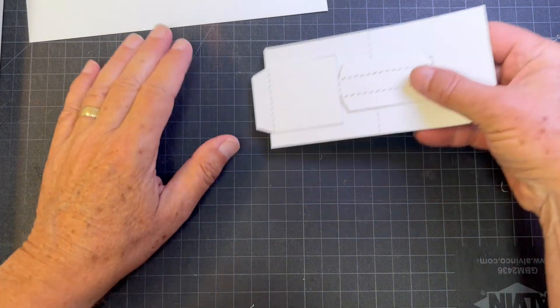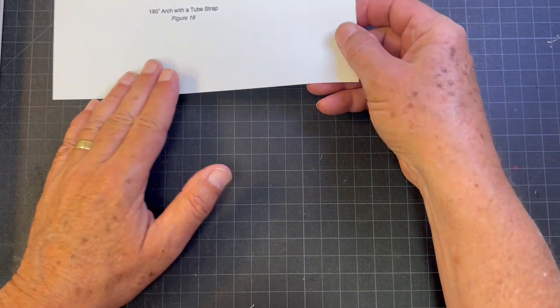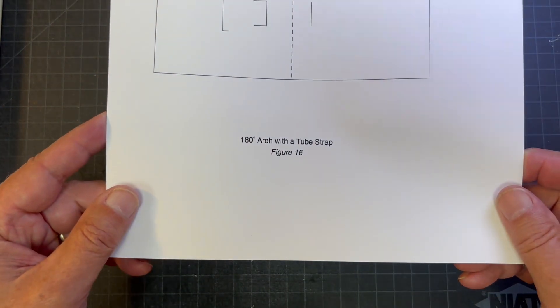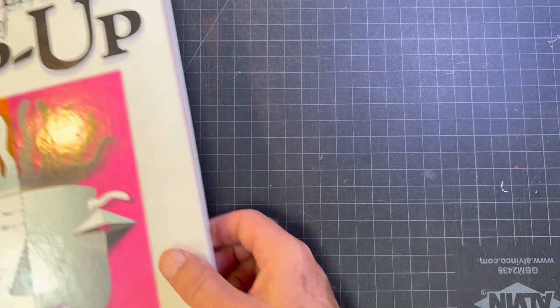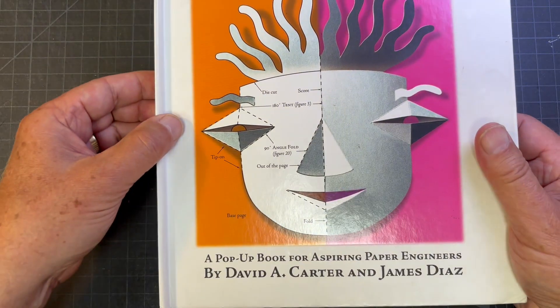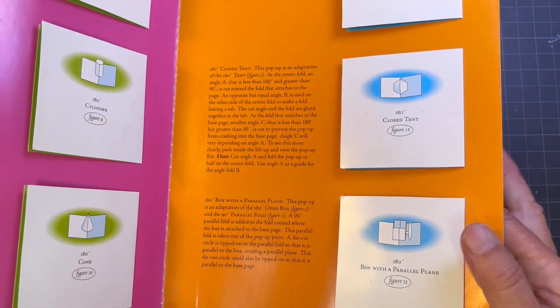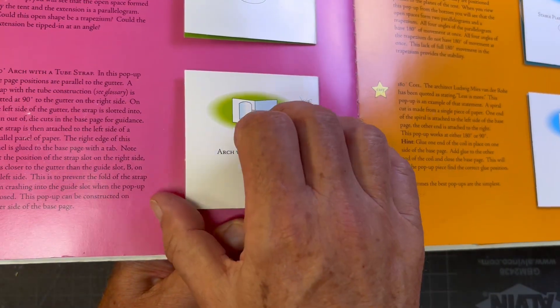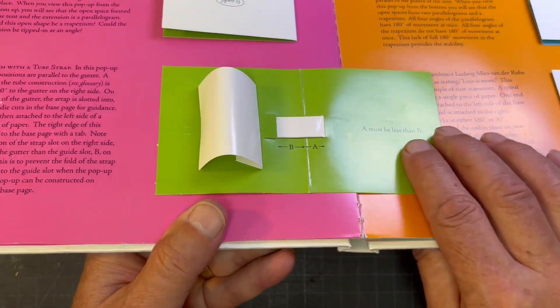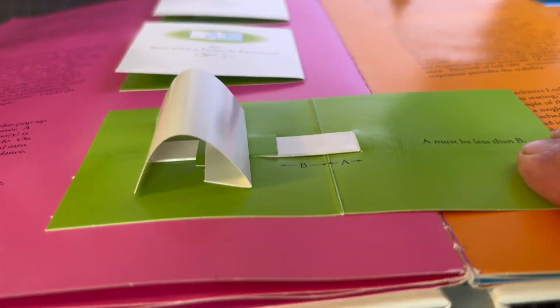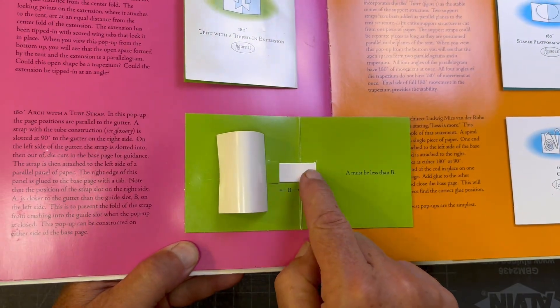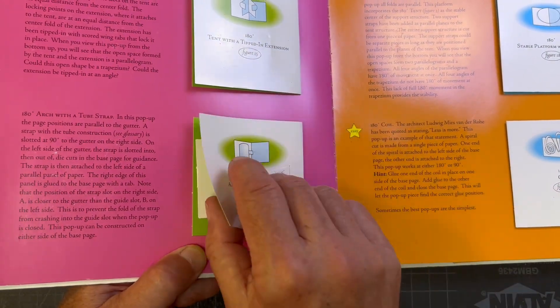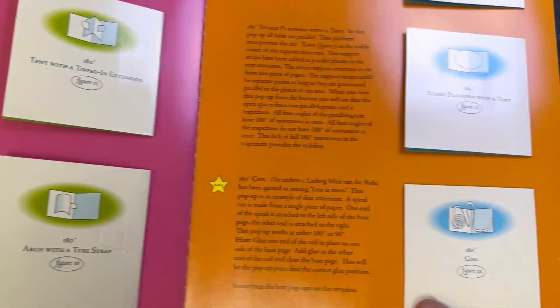Good afternoon everybody, this afternoon we are going to build the 180 degree arch with a tube strap. It's from the elements of pop-up and this is the piece we'll be building right here. The tube strap makes an arch and it has a strap that goes across the center fold on the base page and that's what pulls everything open. I'll show you how this works.